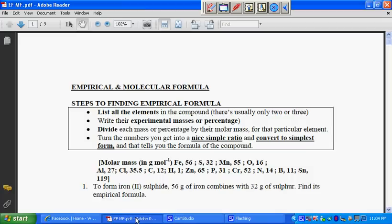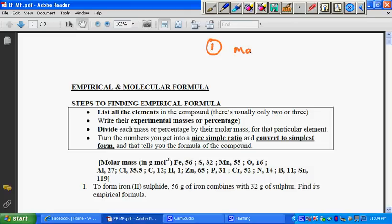Now let's consider empirical and molecular formula. We want to find out the steps to finding empirical formula. First, you list all the elements in the compound - there's usually only two or three. They give experimental masses or percentages, so the first step is to list out the mass or percentage.